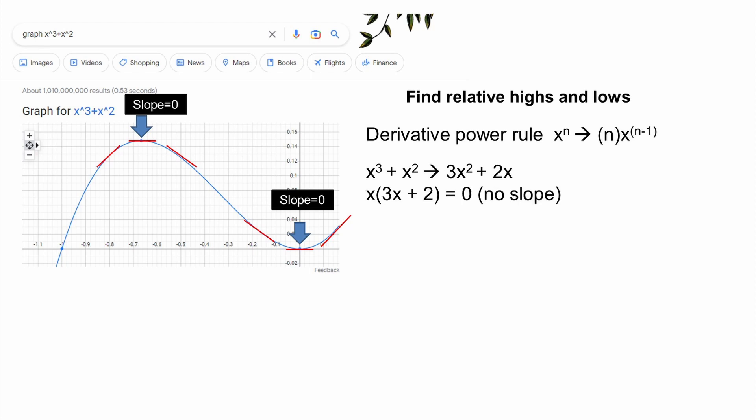As stated, if we have a zero slope, the line will be flat and designated as a relative high or low.